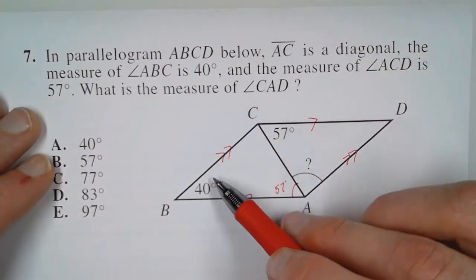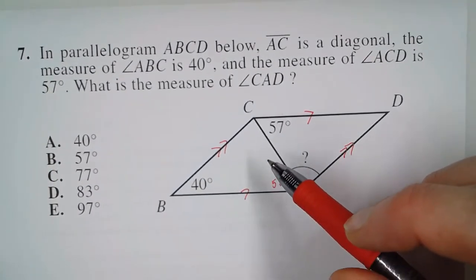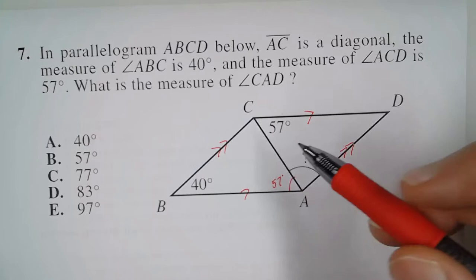So what we have is this triangle right here. And we know that in a triangle all angles have to add up to 180 degrees.